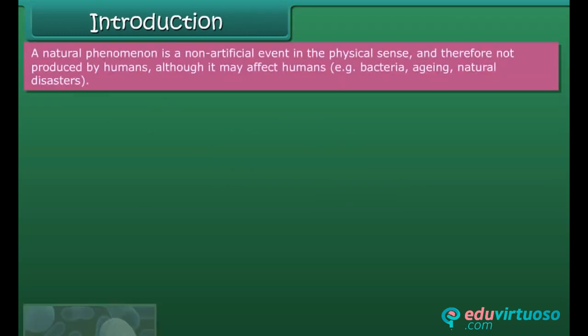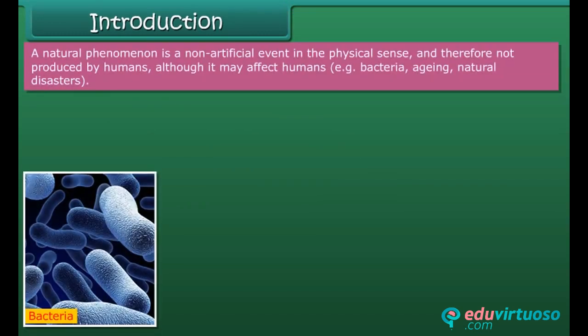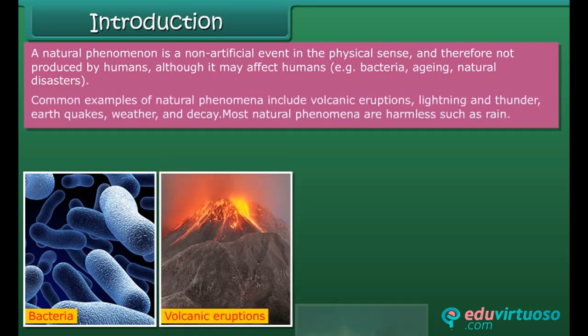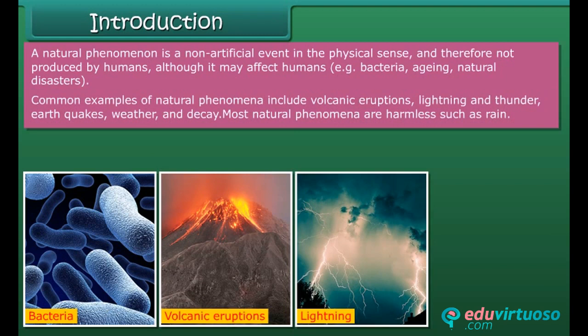A natural phenomenon is a non-artificial event in the physical sense and therefore not produced by humans, although it may affect humans — for example, bacteria, aging, and natural disasters. Common examples of natural phenomena include volcanic eruptions, lightning and thunder, earthquakes, weather, and decay. Most natural phenomena are harmless, such as rain.